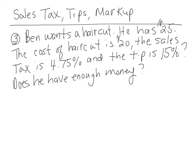Number three is a little bit more complicated, but not too much. It's about Ben going to get a haircut, and he has $25 in his pocket. Let's circle the math. The cost of the haircut is $20. The sales tax is 4.75%, and the tip is 15%. These two costs are added on to the cost of the haircut.